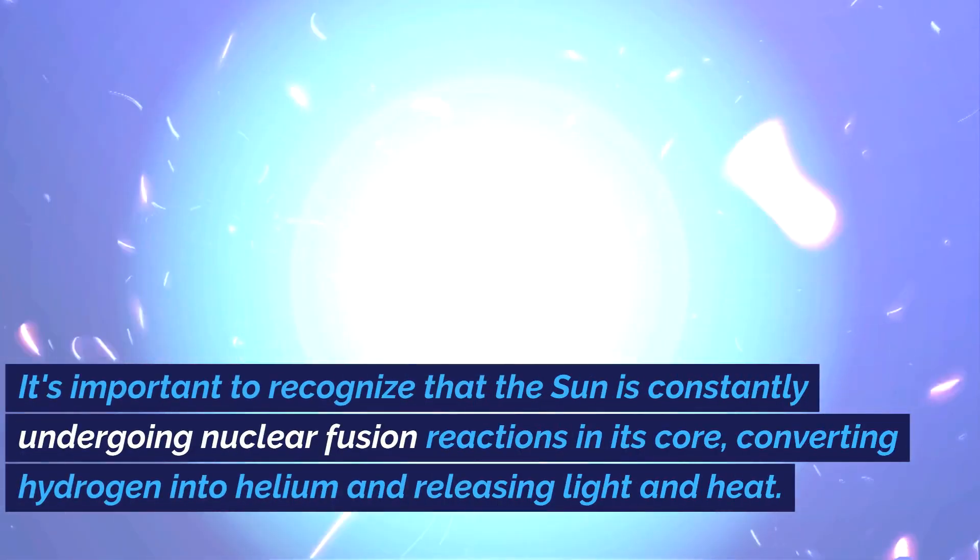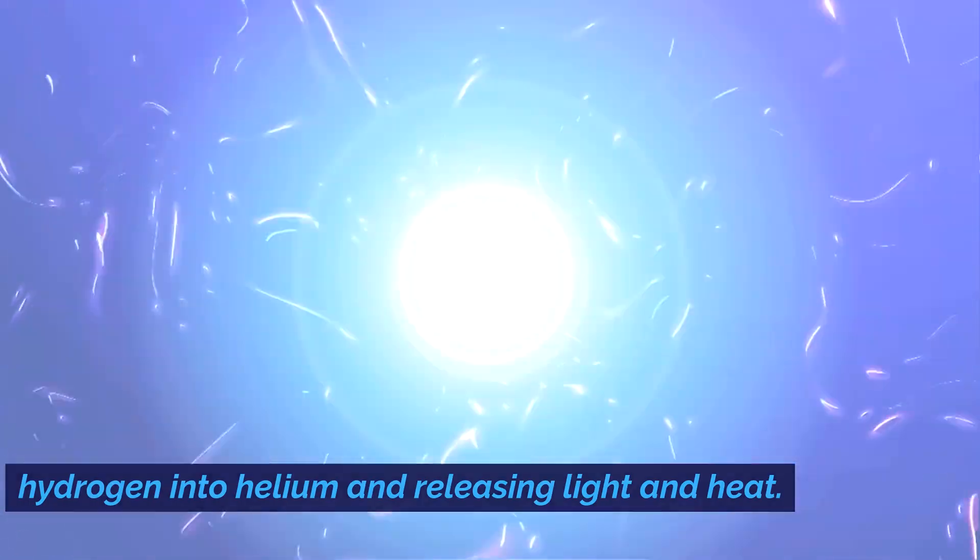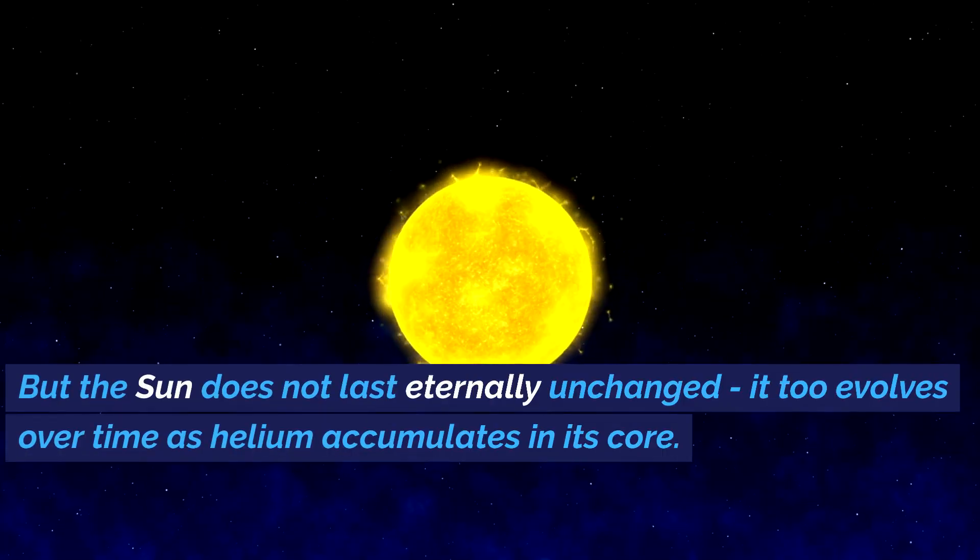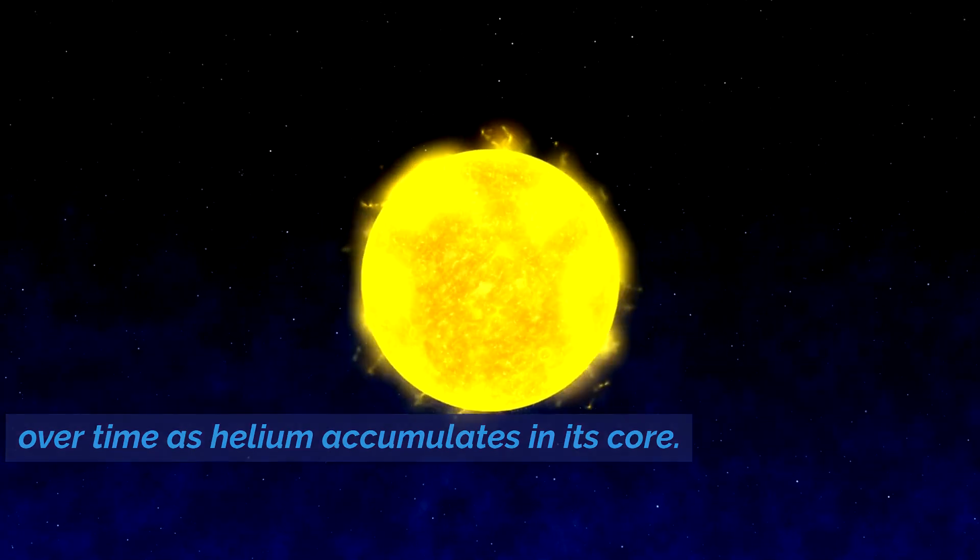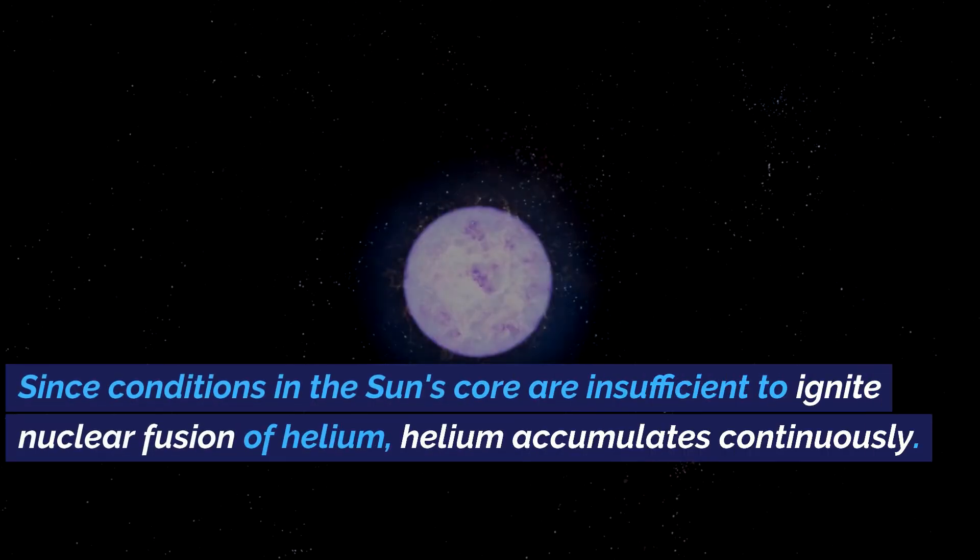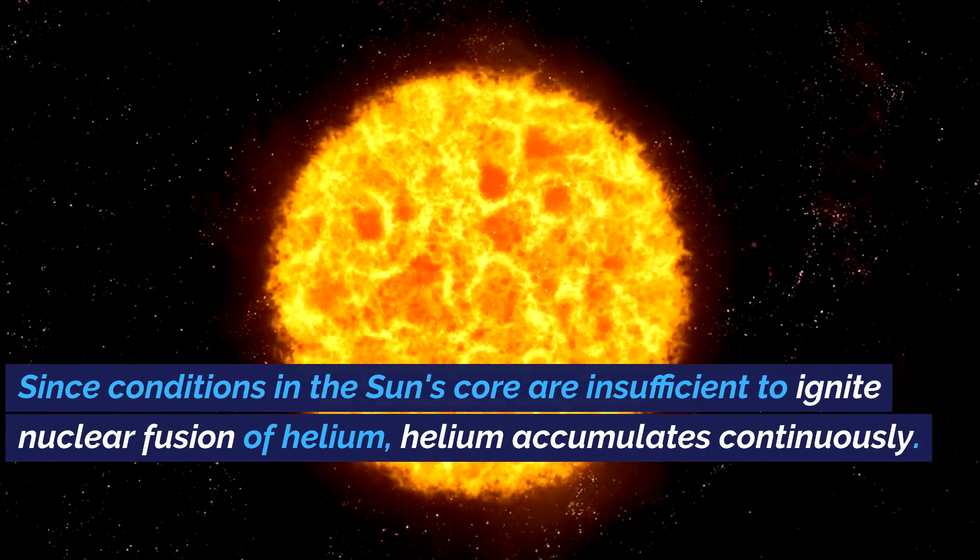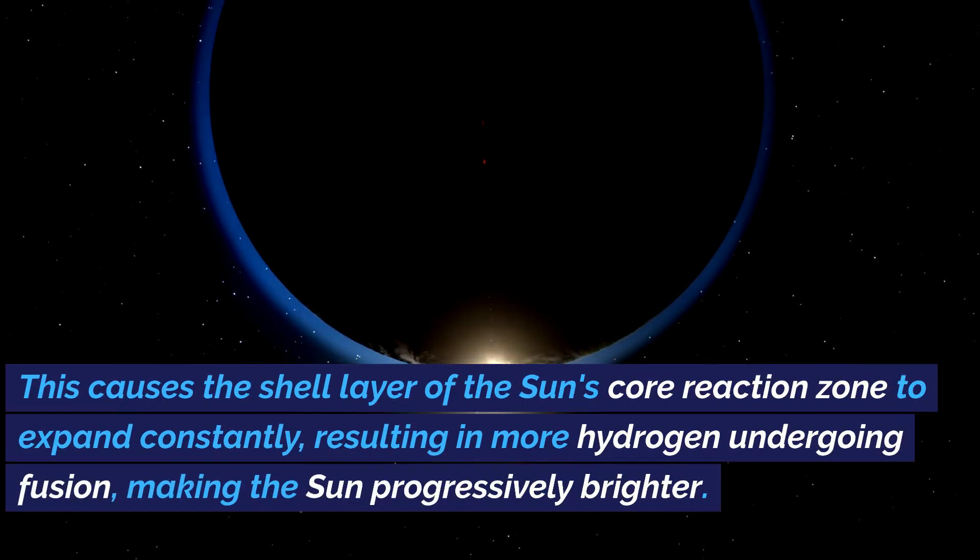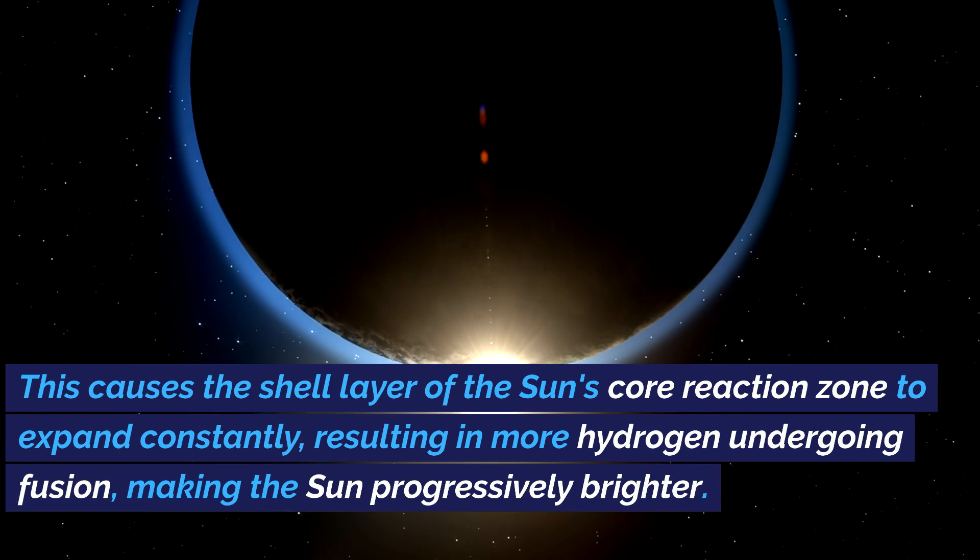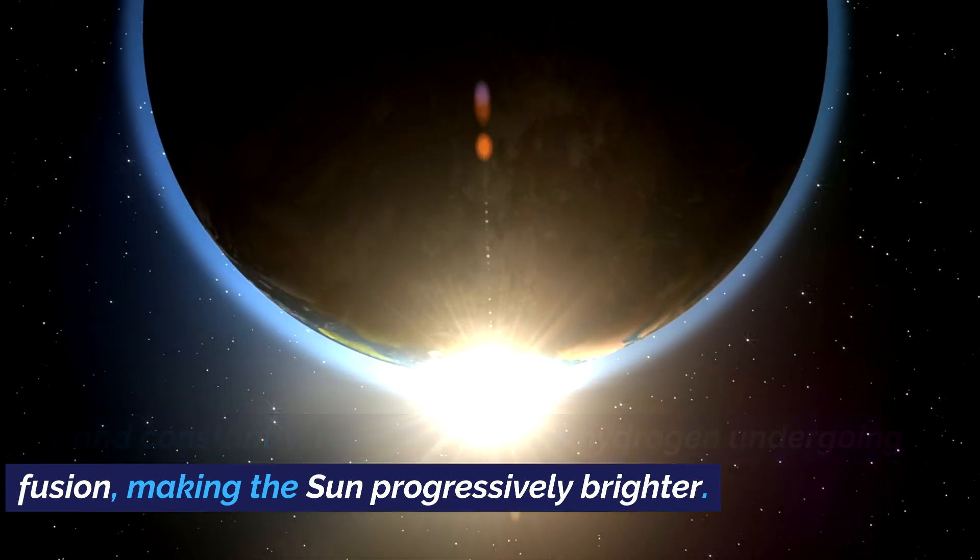It's important to recognize that the Sun is constantly undergoing nuclear fusion reactions in its core, converting hydrogen into helium and releasing light and heat. But the Sun does not last eternally unchanged. It too evolves over time as helium accumulates in its core. Since conditions in the Sun's core are insufficient to ignite nuclear fusion of helium, helium accumulates continuously. This causes the shell layer of the Sun's core reaction zone to expand constantly, resulting in more hydrogen undergoing fusion, making the Sun progressively brighter.